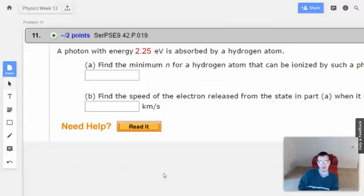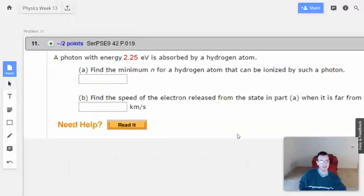Week 13, problem 11. A photon with energy 2.25 electron volts is absorbed by a hydrogen atom. Find the minimum n for a hydrogen atom that can be ionized by such a photon.